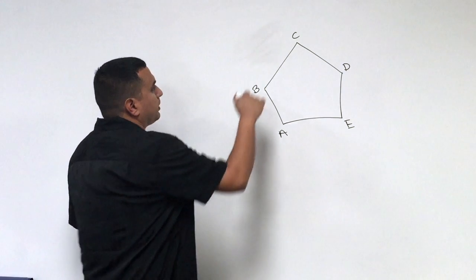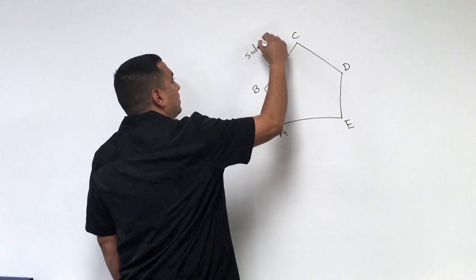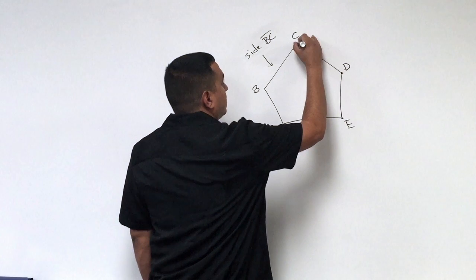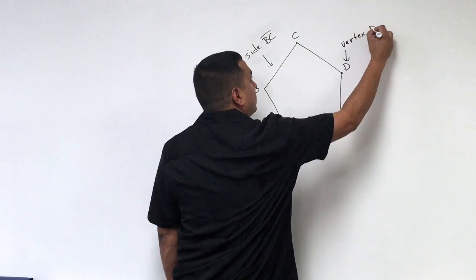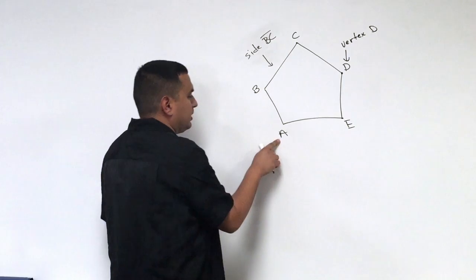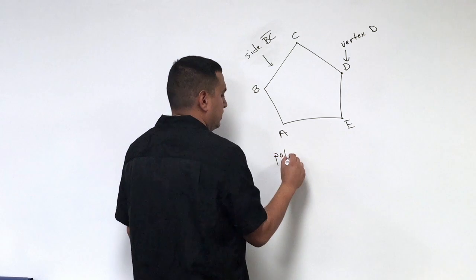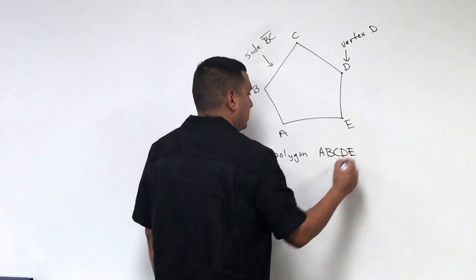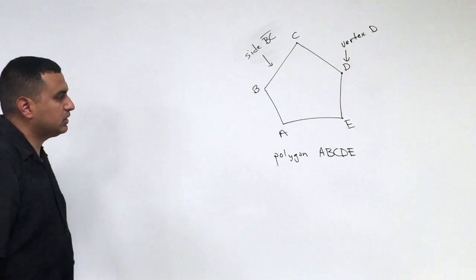Here's an example of a polygon. We would call this segment right here BC, we would call this side BC. And then remember that each of these points right here, that would be the vertex. And then to name it, we would just pick a letter to start with. So let's say I start with A and then I would work my way around. So I would call this polygon A, B, C, D. And remember that we use capital letters to name the points and the polygons.